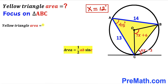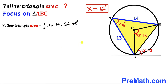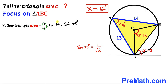So the area of the yellow shaded triangle equals one half times 13 times 14 times sine of 45 degrees. We know that sine of 45 degrees equals 1 divided by the square root of 2. Replacing sine 45 degrees with that value, and noting that one half times 14 equals 7, we can write 13 times 7 times 1 over square root of 2.